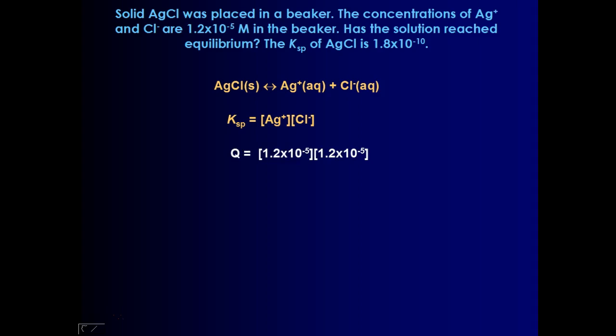If I substitute those in to that expression and solve for Q, I can compare it to the Ksp value to see if precipitation does take place. The Q is 1.4 times 10 to the negative tenth, which is just shy of your Ksp value. So as a result, we have not quite reached equilibrium. We are slightly unsaturated.